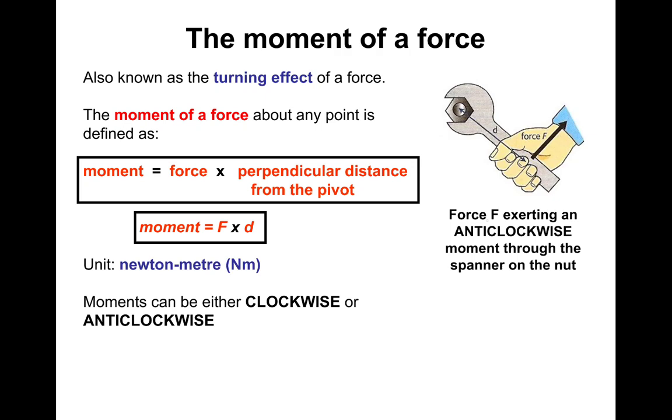So as an example, there's a force F, and as you can see, that force F is perpendicular to this distance D to the pivot, which is this point there. So it's the force multiplied by the perpendicular distance from the pivot. This is the pivot.